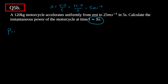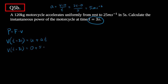The equation for power is P = F · v. Since force and velocity are in the same direction, I need the velocity at t = 3 s. Using v = u + at: v = 0 + 5 × 3 = 15 meters per second.